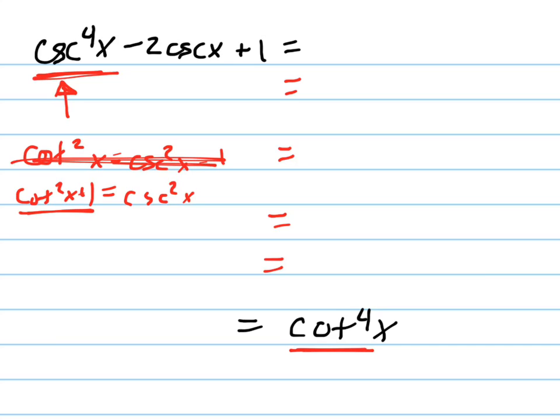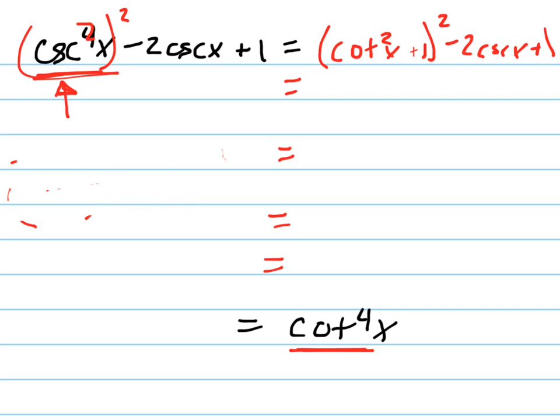So that's what I want to use. So I'm going to plug this in, but there's really, this is like, that squared. So I'm going to write cotangent squared x plus 1 squared minus 2 cosecant x plus 1. Oops, plus 1. Got that so far? Mm-hmm. All right.